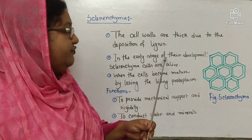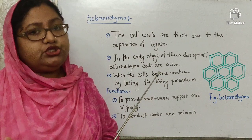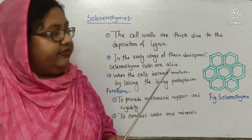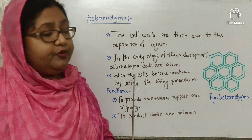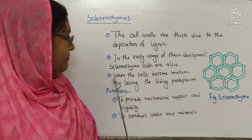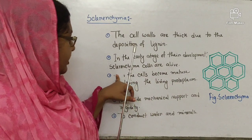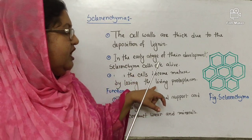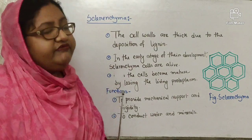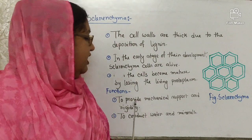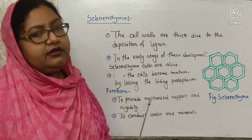In the early stage of development, sclerenchyma cells are alive. But when the cells become mature, they lose their living protoplasm. The functions of sclerenchyma: it provides mechanical support and rigidity, and it also helps to conduct water and minerals.